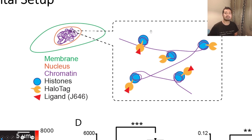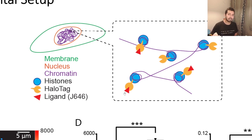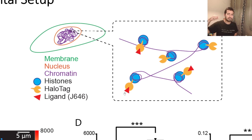You can zoom in here. This is how you can move — you have this, and you have a tag. It's an abstraction, right?